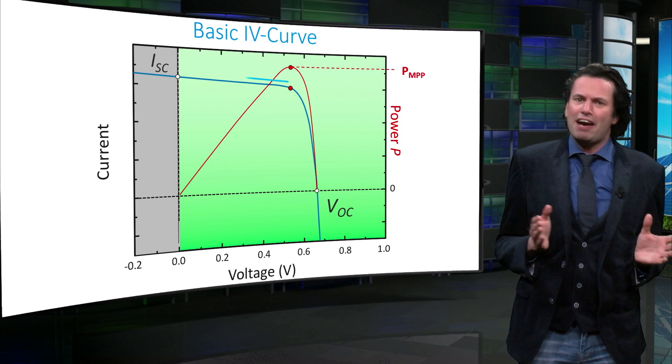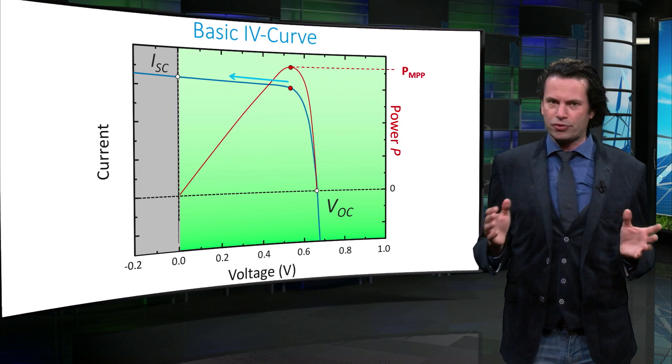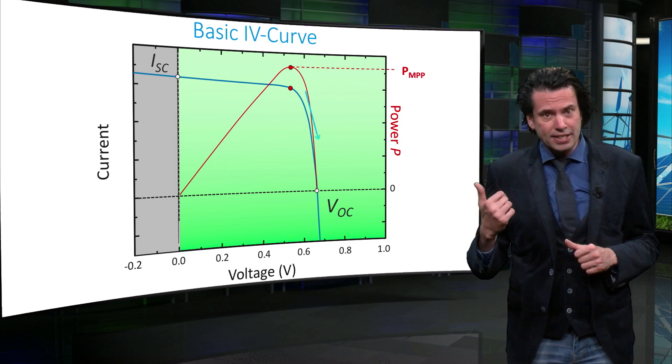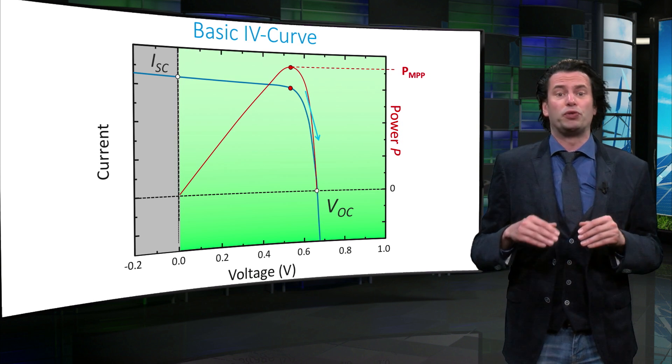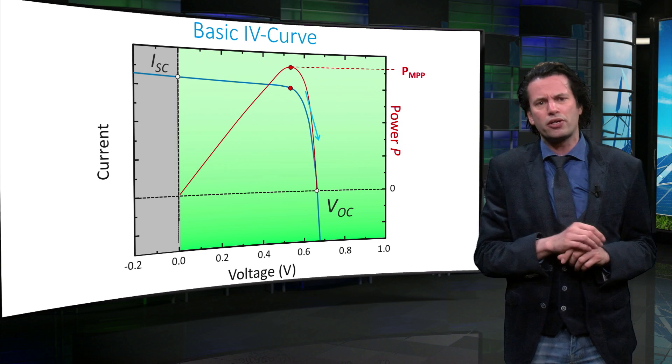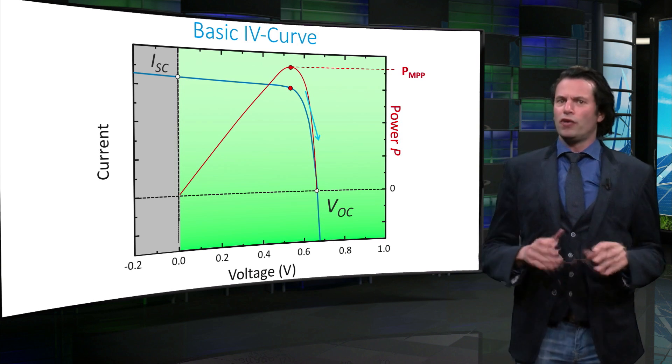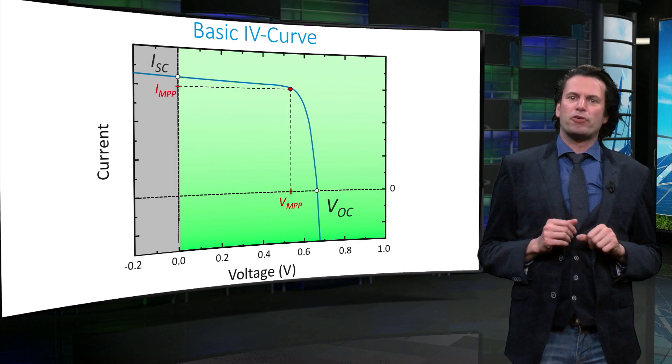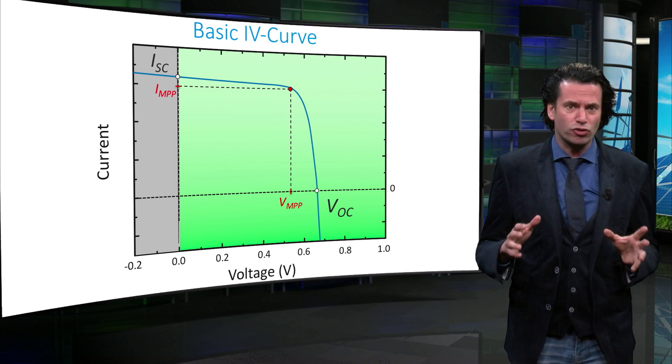If you move left from this point, the voltage will decrease without an increase in current, resulting in less power. If you move right and down from the maximum power point, you can observe that the current will reduce with only a small increase in the voltage, resulting again in a lower power. The voltage and current at maximum power point are the maximum power point voltage and current. These are two other important characteristics of a solar cell, which will in turn determine the characteristics of the solar module they will end up in.